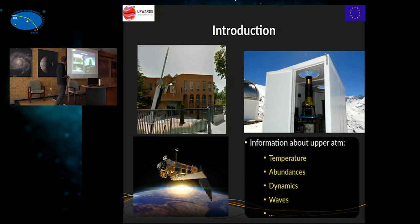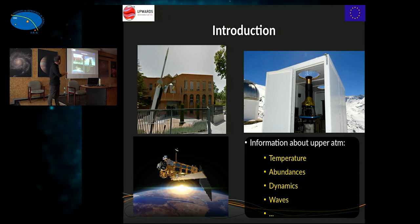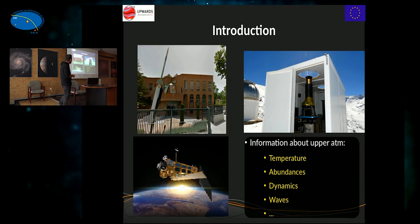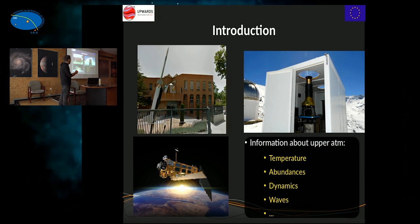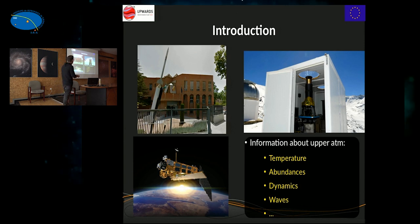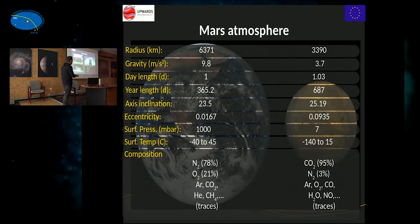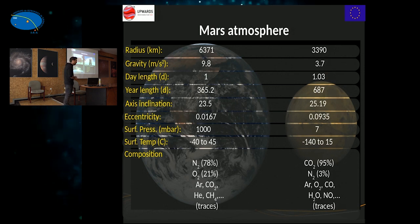We are also involved in space missions to Earth and other planets to analyze the light coming from those planets. The reason is that airglow provides a lot of information about regions of the atmosphere that are very difficult to study by any other means. Airglow gives information about temperature, abundances of different species, dynamics, winds, waves, and more — which is very difficult to obtain otherwise.